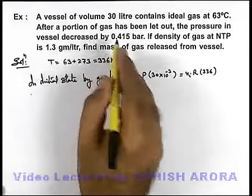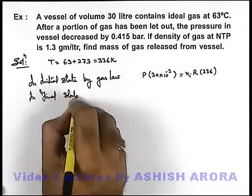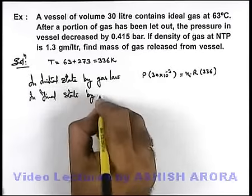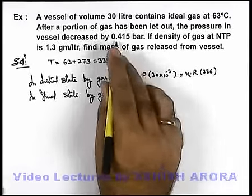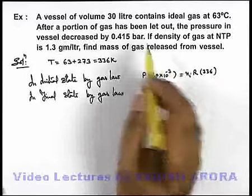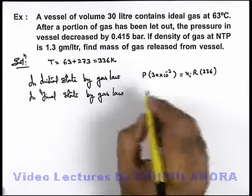After some gas has been let out leaked out, in final state, by gas law, the pressure is reduced by 0.415 bar. One bar, one atmospheric pressure we can assume to be 10 to power 5 pascal. So it is P minus 0.415 into 10 to power 5 pascal.